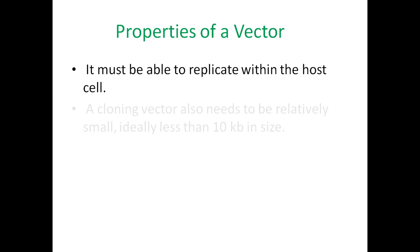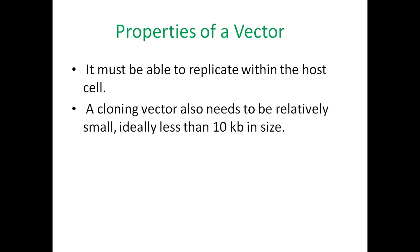The next property is that for cloning purposes the vector should be relatively small in size — ideally less than or approximately 10 kb. If we use larger vector molecules, there are possibilities that they will be broken during the purification steps because larger molecules are very difficult to handle and manipulate. So a vector should be able to replicate within the host cell and it should be smaller in size.